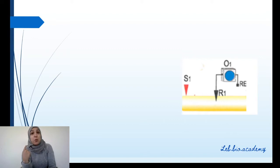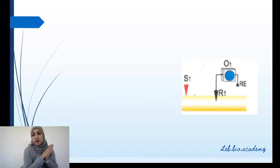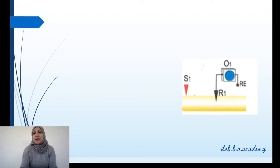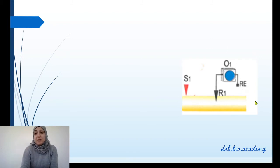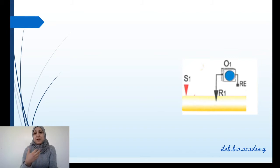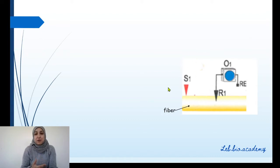What you're seeing in this picture is a nerve fiber. A nerve fiber is one axon, whereas a nerve is a bundle of nerve fibers. In this lesson we will talk only about a nerve fiber, which is one axon.